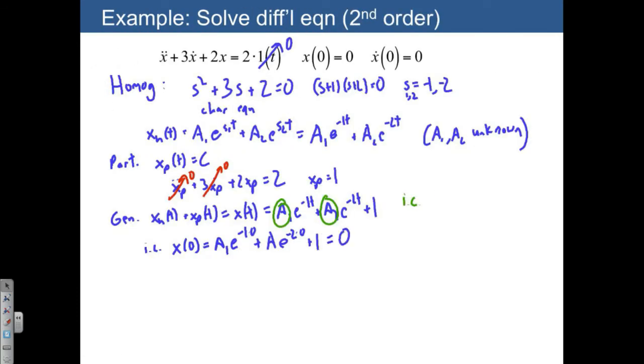And then notice that we have some terms that drop away, so a1 plus a2 plus 1 equals 0. So that's one initial condition.